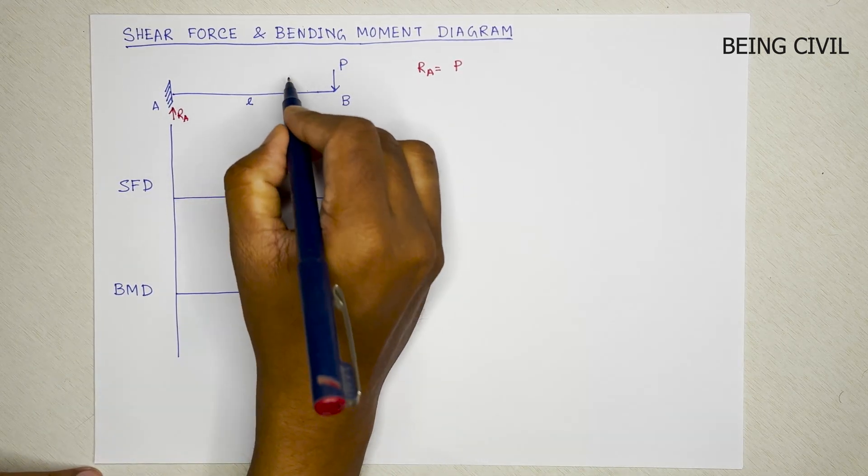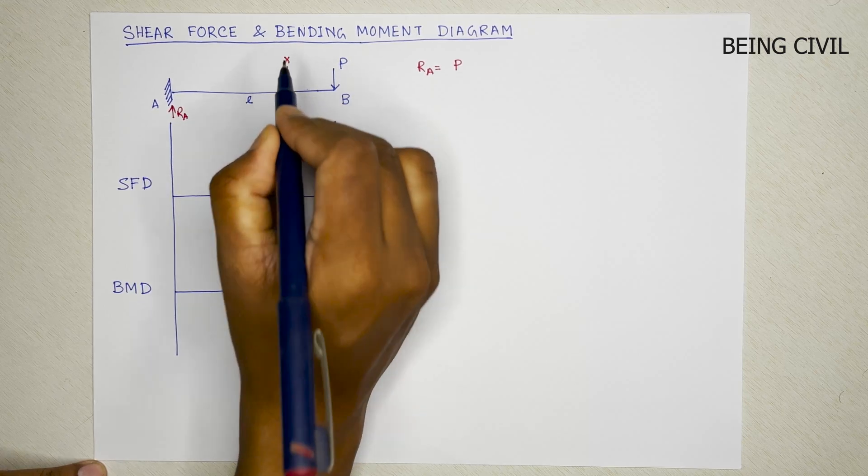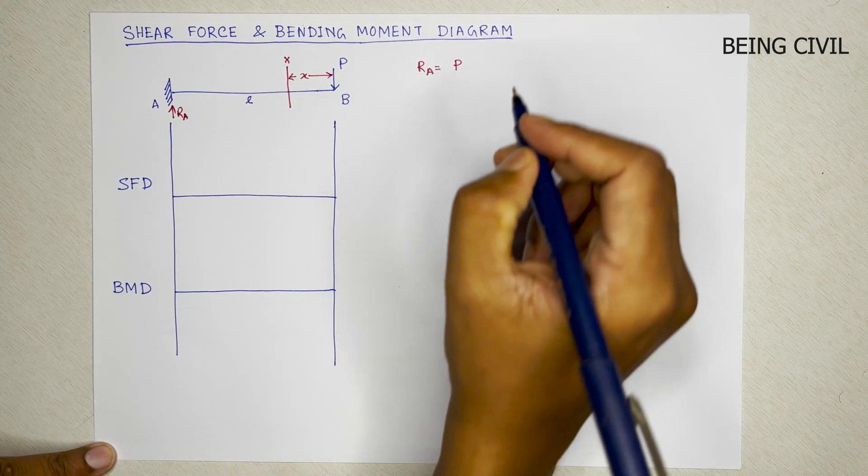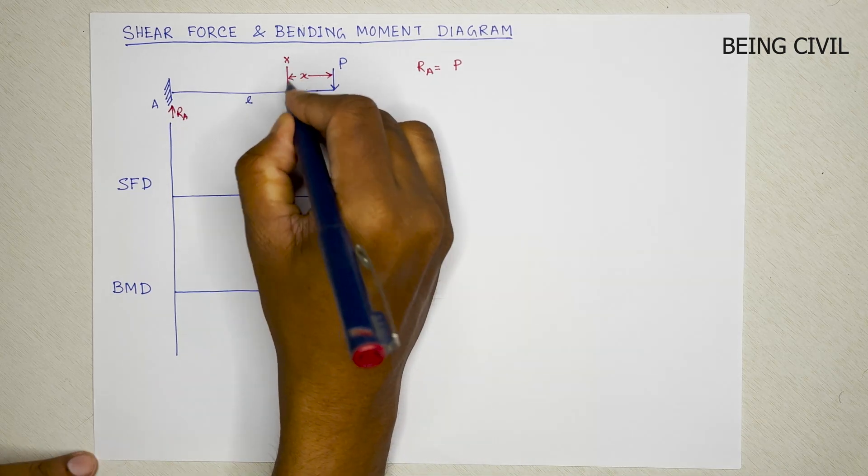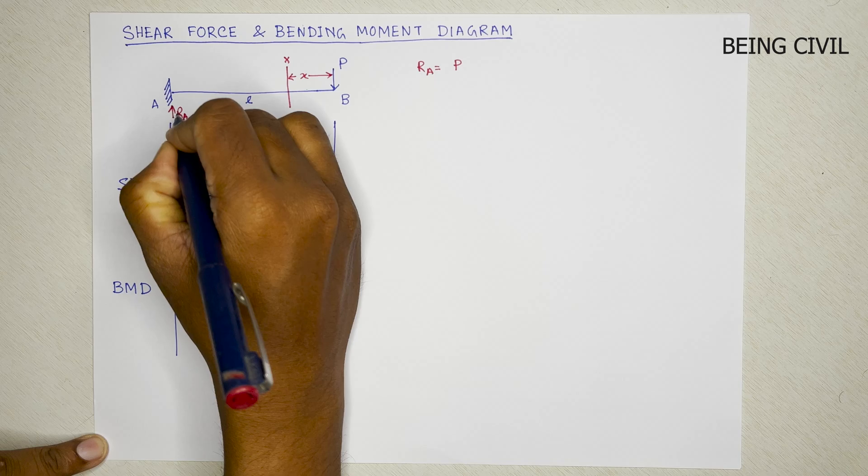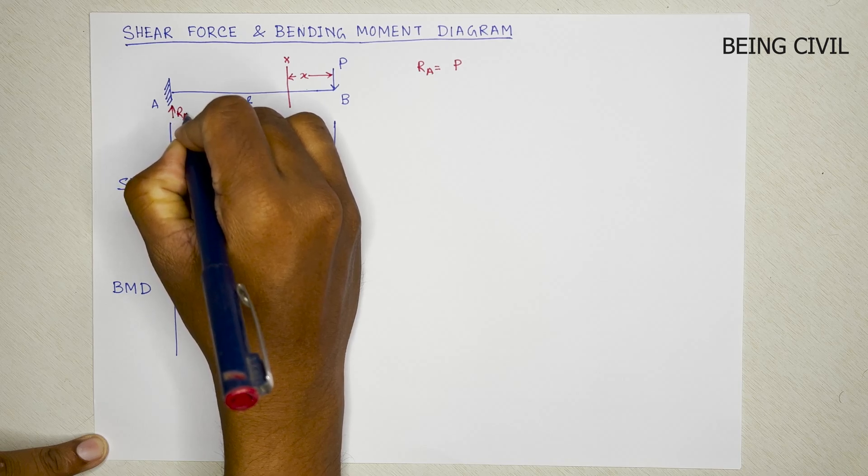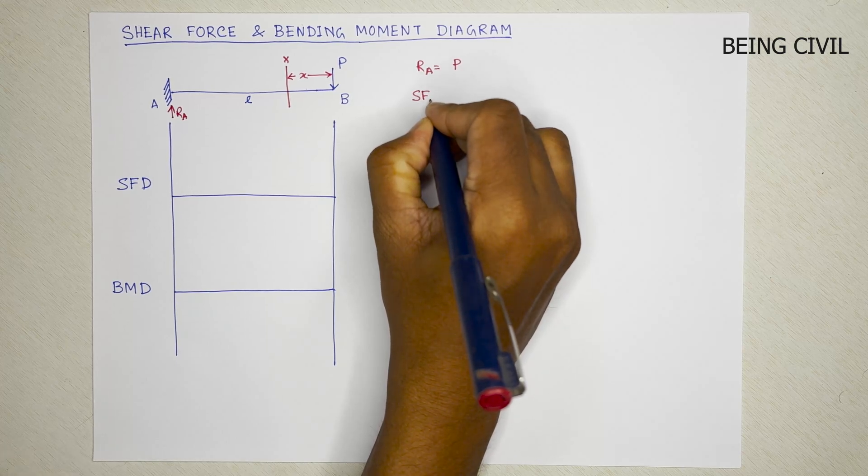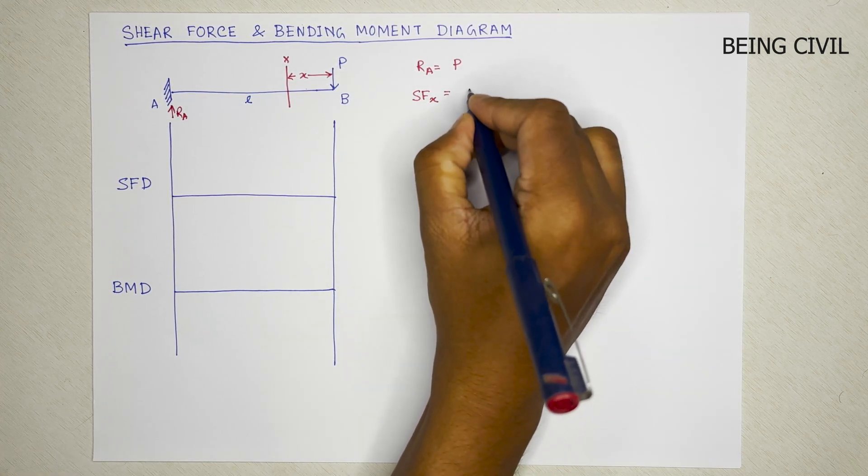Now we'll take a section X at a distance of small x from the free end. So if you cut the section at the left side, the reaction force RA is P. So the shear force at distance X will be P.